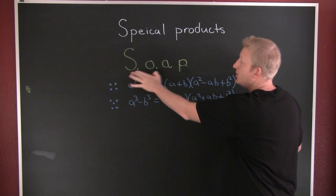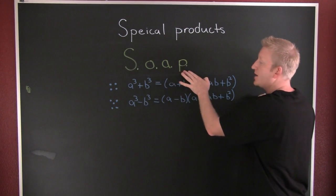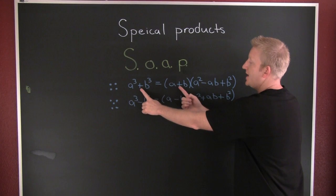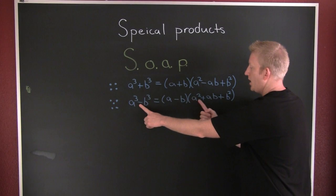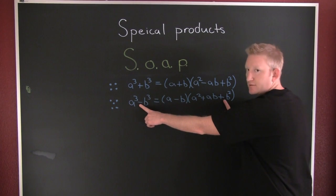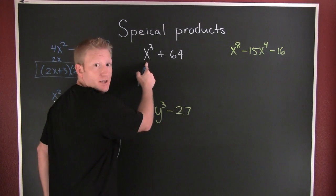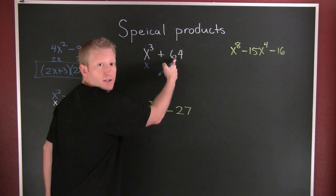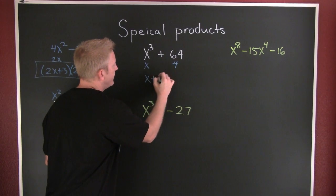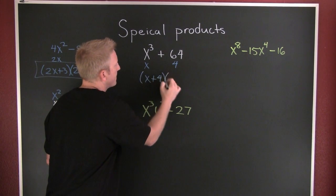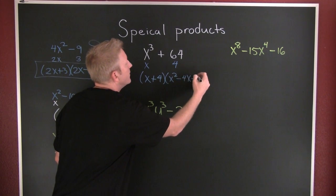Same, Opposite, Always Positive. It appears to be the sum of cubes. Is this the cube of something? Yes — x. Is this the cube of something? Yes — 4. So every single time it's (x + 4)(x² − 4x + 16).